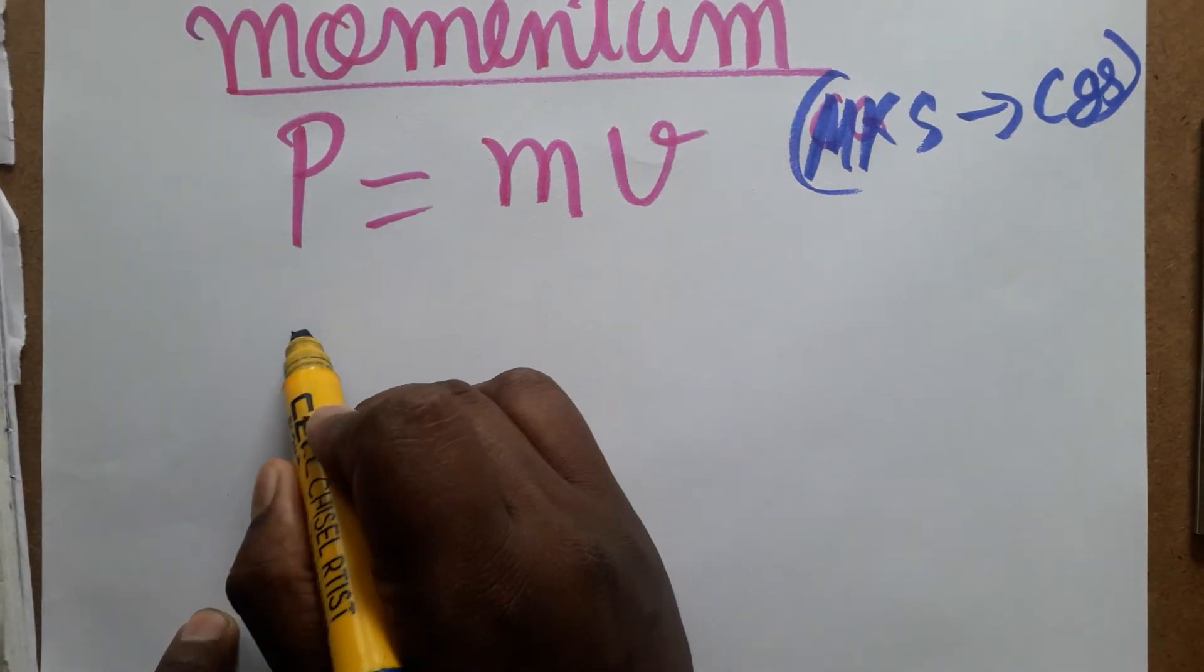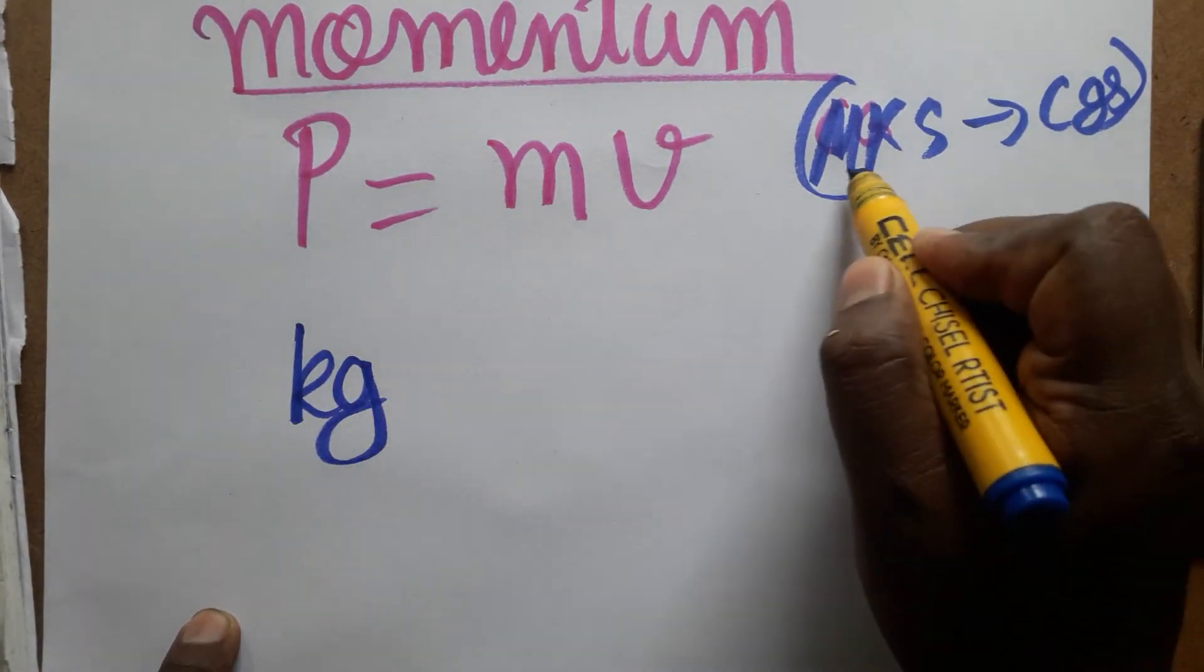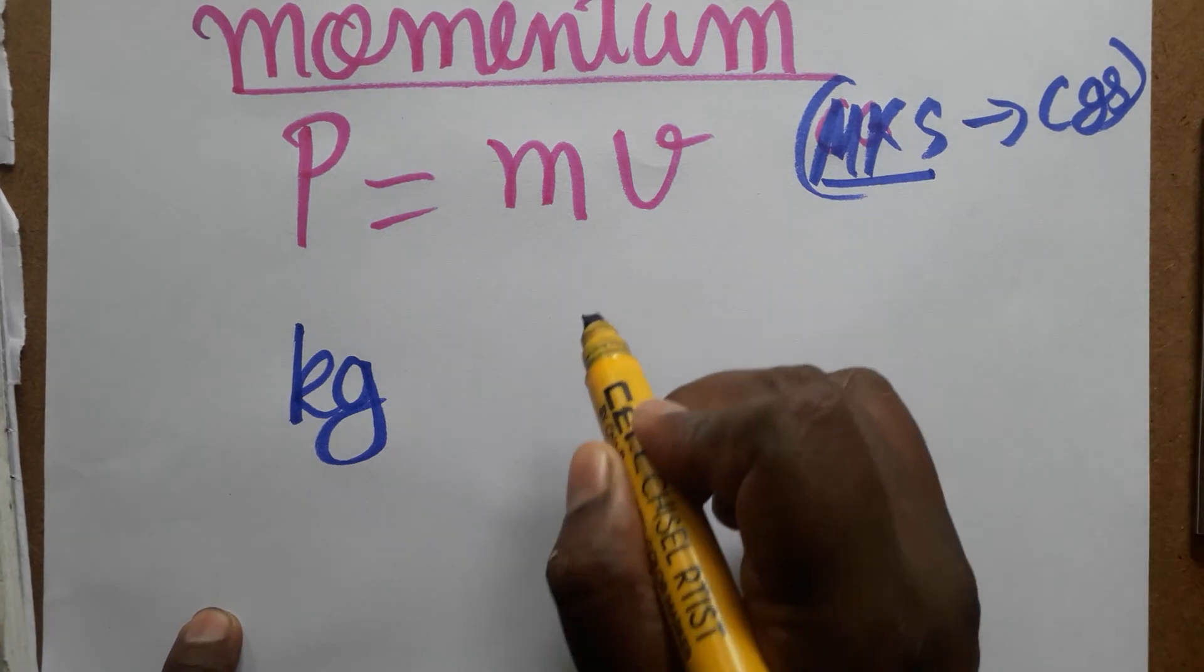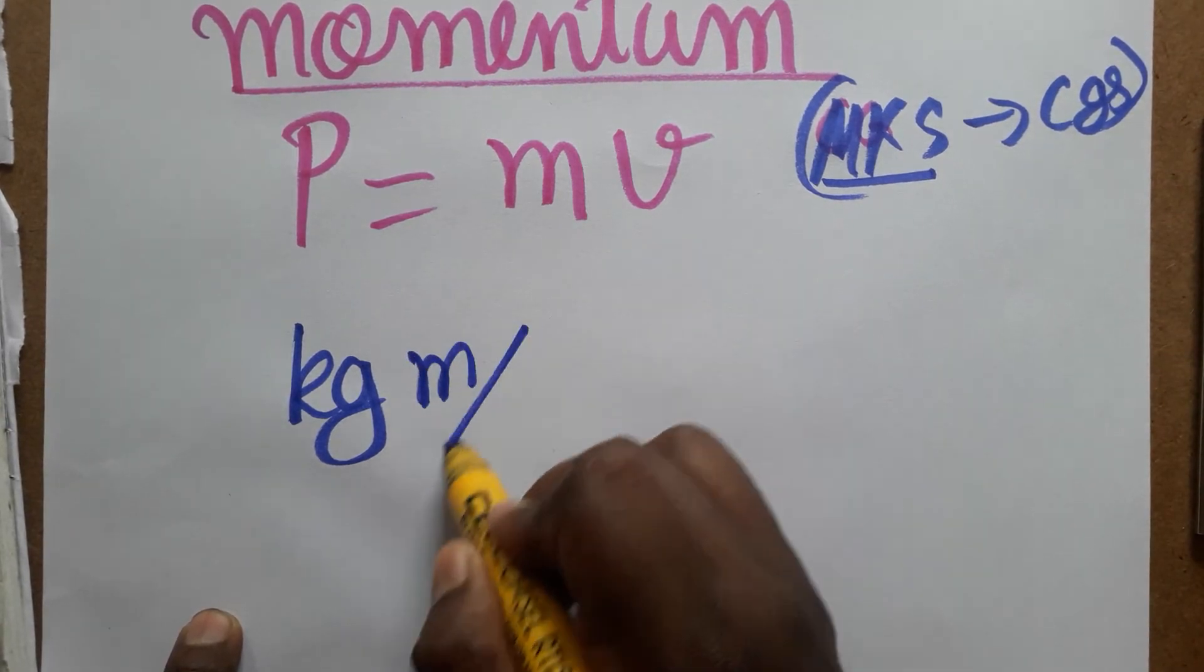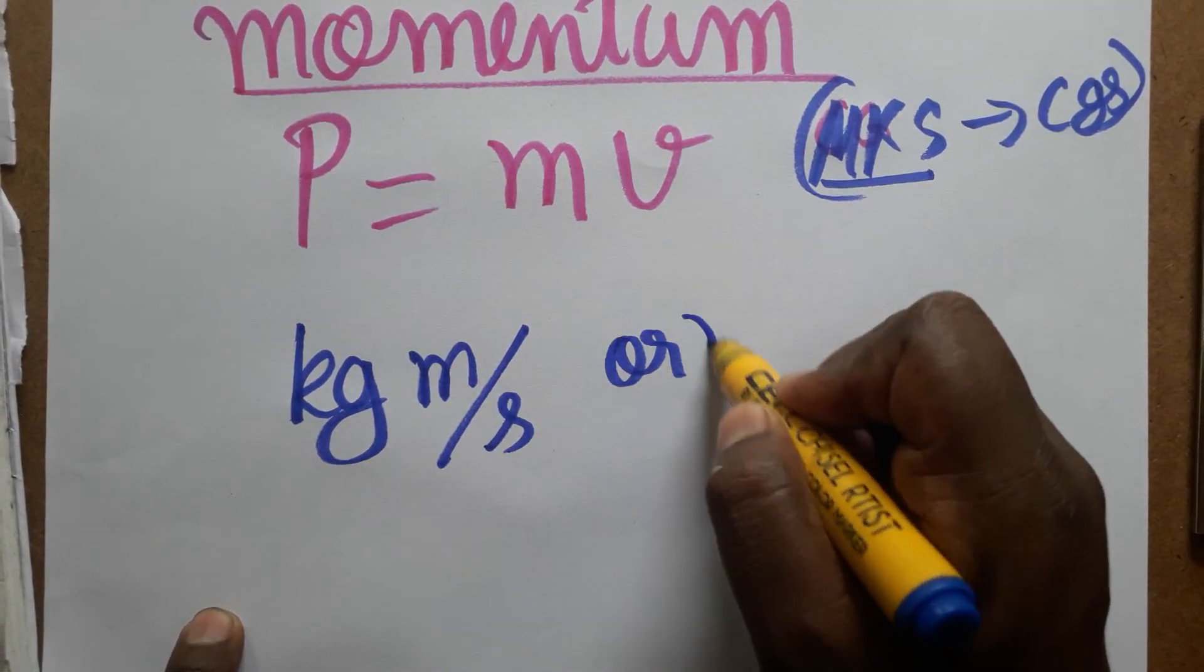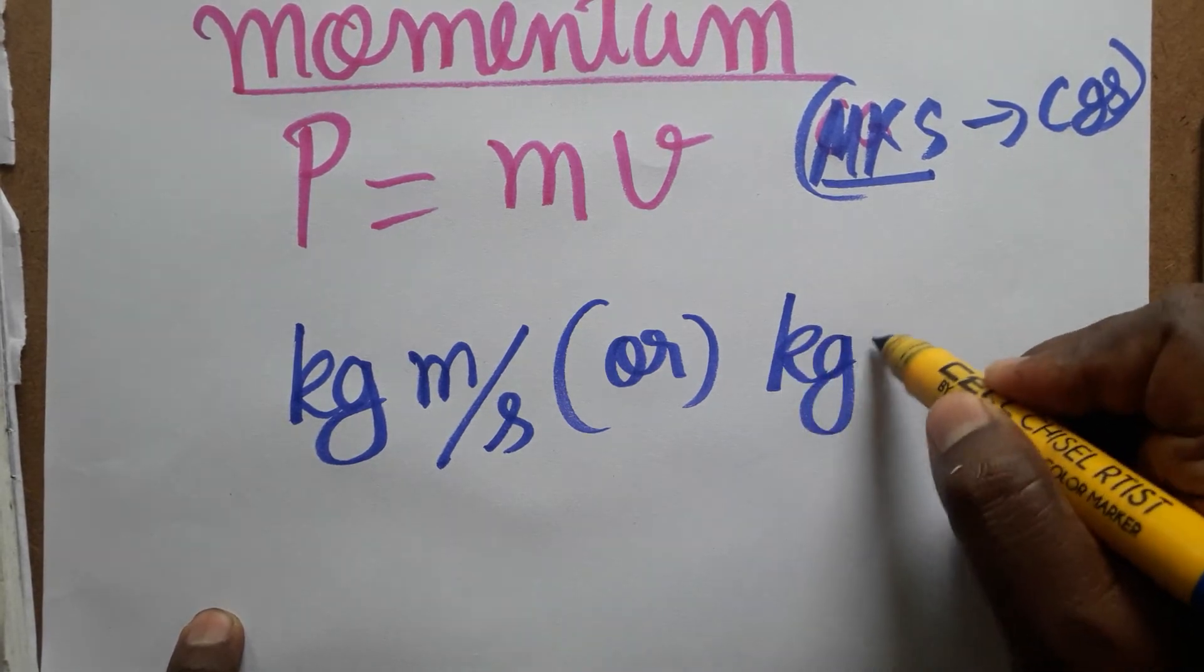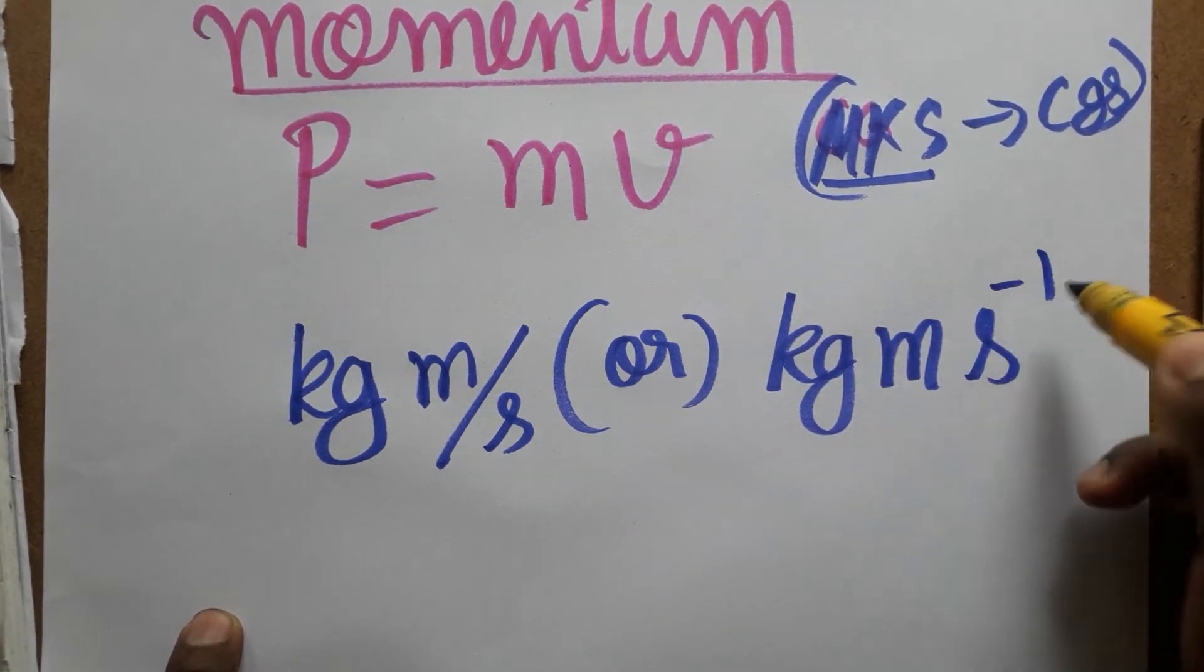Momentum is mass into velocity. Mass SI unit is kilogram in MKS system, meter kilogram second. Velocity SI unit is meter per second, so we can write as kilogram meter second minus one.